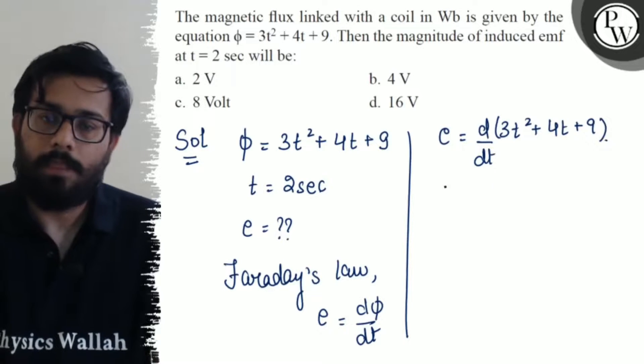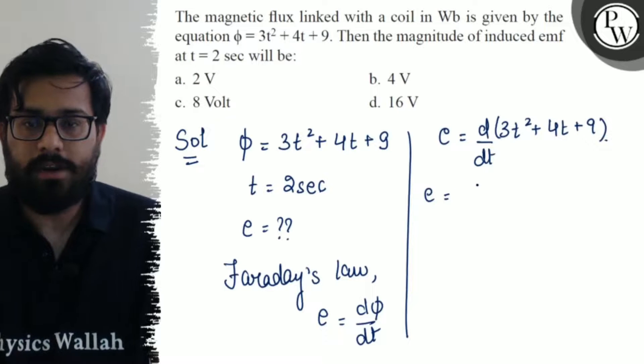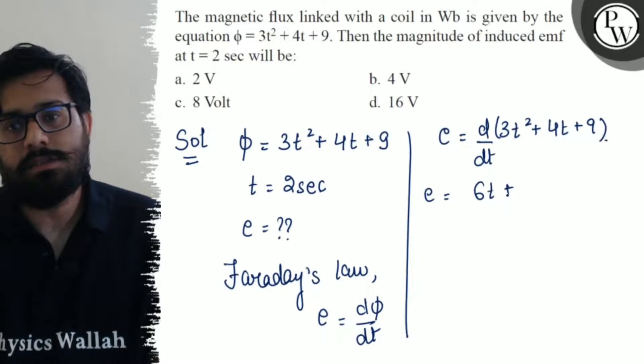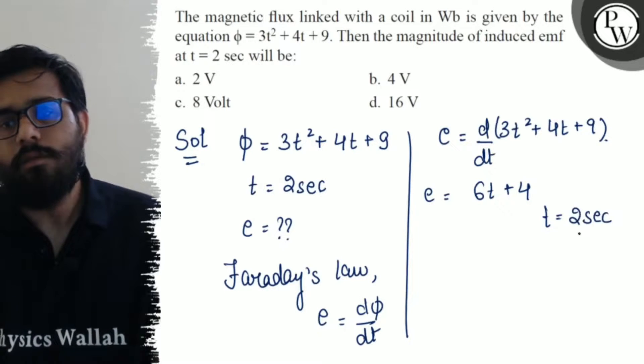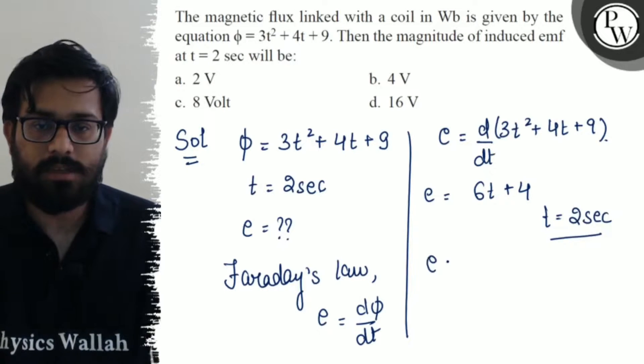On differentiating, we get the value of 6t + 4. At t = 2 seconds, we need to find the induced emf, so this comes out to be 6 times 2 plus 4.